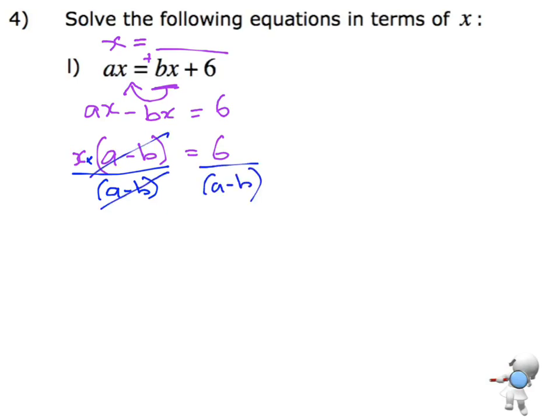So these are going to cancel out on the left-hand side, and I'm going to be left with x equals 6 over a minus b. And I don't mind whether you've got that in brackets or without brackets. Either is quite acceptable. And there's your answer.